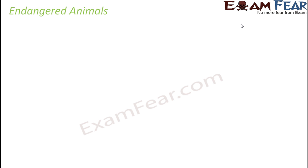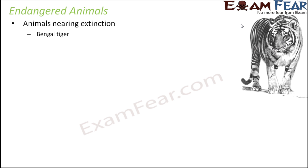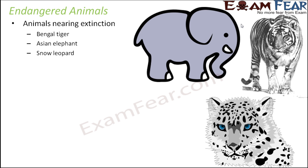Since we are talking about extinction, there are animals which are nearing extinction. They have not become extinct — they still exist — but their numbers are reducing so fast that they are at a higher risk of becoming extinct. Some examples are the Bengal tiger — you can actually count the number of tigers left — and the Asian elephant.